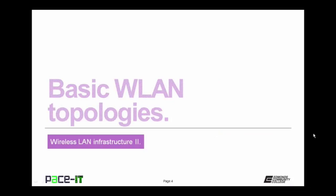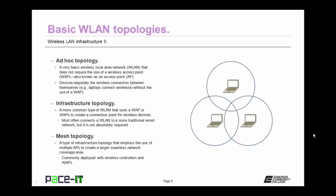I'm going to begin by talking about wireless local area network topologies. The first topology is the ad hoc topology. It's a very basic wireless local area network that does not require the use of a wireless access point, which can also be called a WAP or an access point. The devices negotiate the wireless connection between themselves. An example of this is when laptops connect wirelessly without the use of a wireless access point.